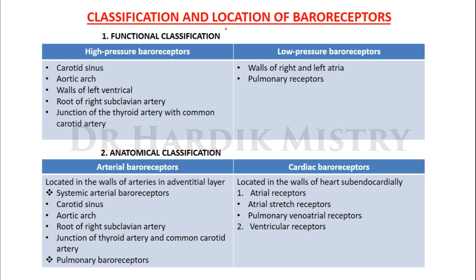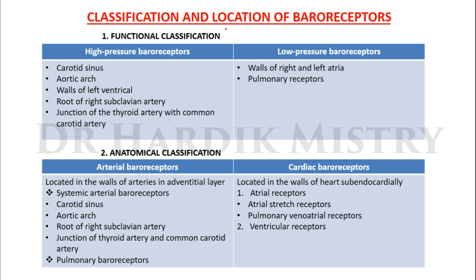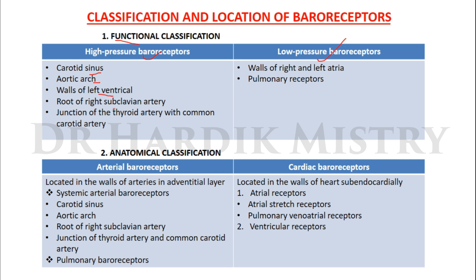Classification and location of baroreceptors: we classify baroreceptors on the basis of their function and anatomical location. Functional classification includes high pressure baroreceptors and low pressure baroreceptors. High pressure baroreceptors are present in the carotid sinus, aortic arch, walls of left ventricle, root of right subclavian artery, and junction of thyroid artery with the common carotid artery. Low pressure baroreceptors are present in the walls of right and left atria and pulmonary receptors.